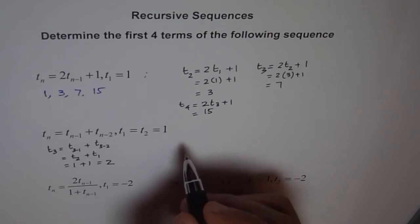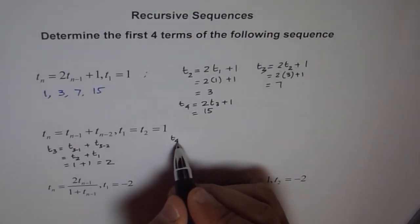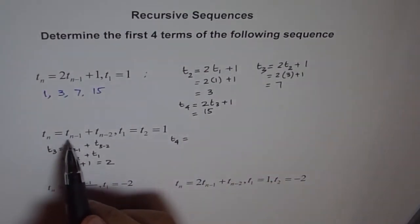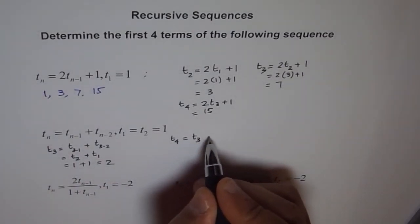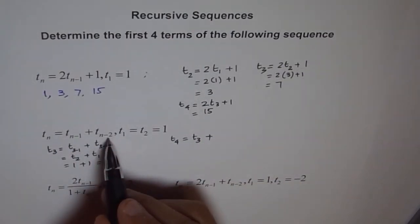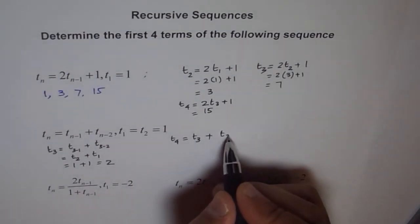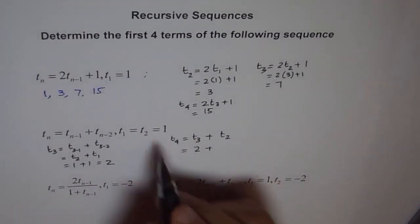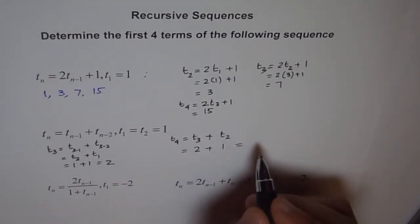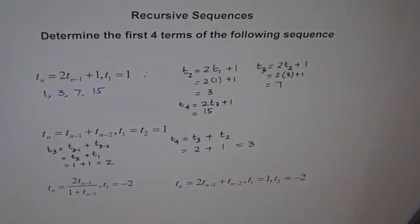Similarly, I will do T4 for you. So T4 equals T3 plus T2. What is T3? T3 we just calculated as 2. So we will put 2 here and T2 is 1. And when we add them, we get 3. So these are our third and fourth terms.